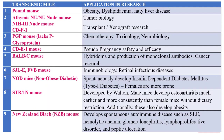SJL/e and FBB mice are useful in immunobiological research and retinal infectious diseases. The NOD (non-obese diabetic) mouse spontaneously develops insulin-dependent diabetes mellitus, with females more prone to diabetes. The STR/1N mouse was developed by Walton — male mice develop osteoarthritis greater than females, with no need for dietary restrictions, and can also develop obesity. The New Zealand Black (NZB) mouse develops systemic lupus erythematosus, hemolytic anemia, glomerulonephritis, and peptic ulceration.